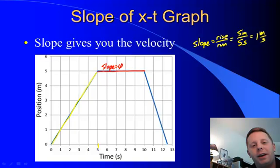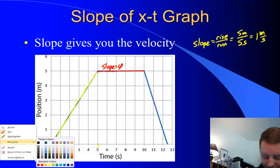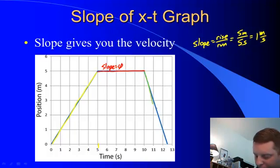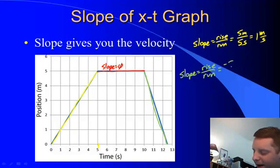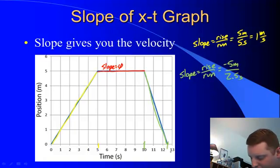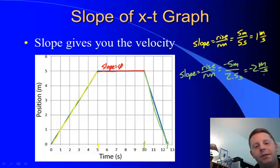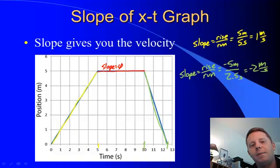That makes sense — that part of the graph occurred when the dog was laying down taking a rest. Finally, as the dog comes flying back to the house, if we take the slope there — rise over run — we have a rise of negative five meters happening in 2.5 seconds, from 10 to 12.5 seconds, giving a slope of negative two meters per second. That is exactly the dog's velocity: two meters per second in the negative direction, back from whence it came.